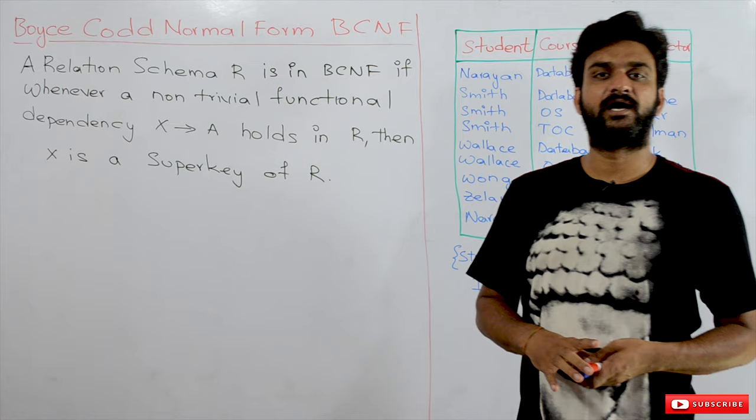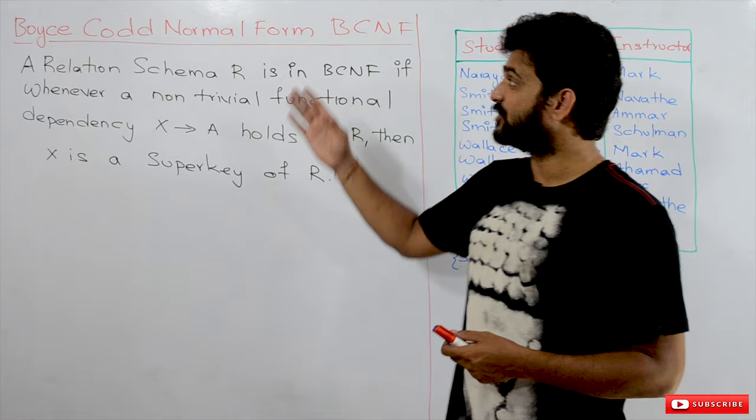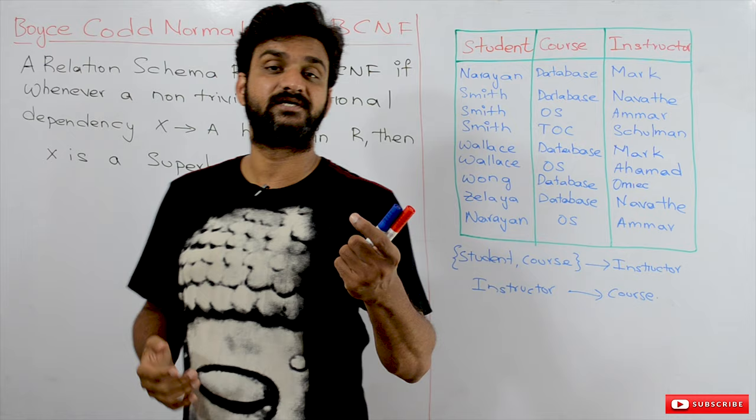Hi, welcome to Learning Monkey. I am Vikram. In this class we will try to understand Boyce-Codd Normal Form, which is also called as BCNF, and it is also called as Strict Third Normal Form.